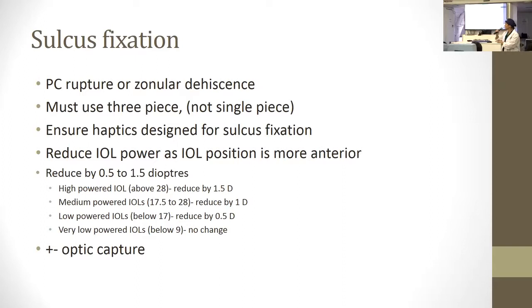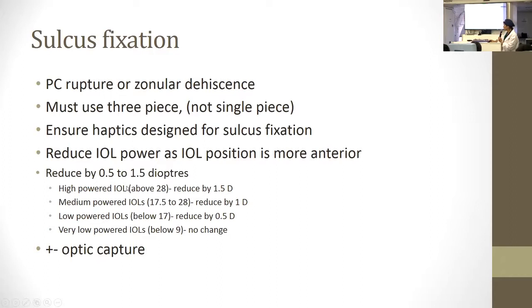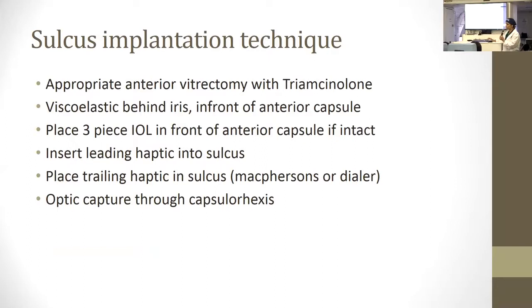Sulcus fixation is used when there's a posterior capsule rupture or zonular dehiscence. With a mild or moderate zonular dehiscence, a sulcus can sometimes be appropriate. You must use a three-piece lens — you can't use a single-piece lens like the IQ lens; you have to use an MA60 or equivalent with proper haptics. Because the lens sits slightly anterior to the bag, you need to reduce the power: reduce by 1.5 for a very strong lens, by 1.0 for medium power, by 0.5 for low power, and no change for very low power. You can also consider doing optic capture.